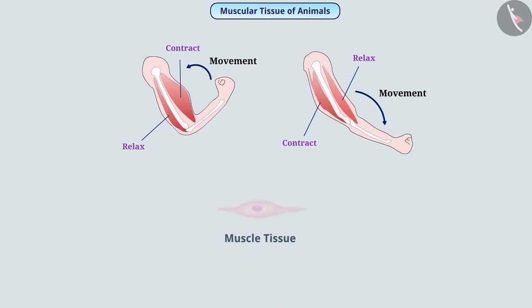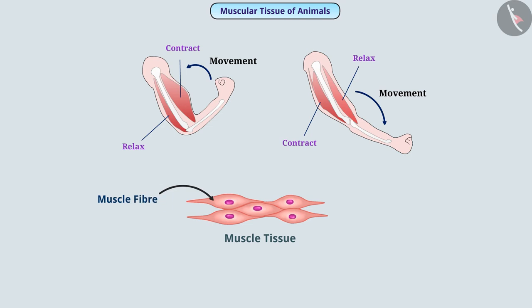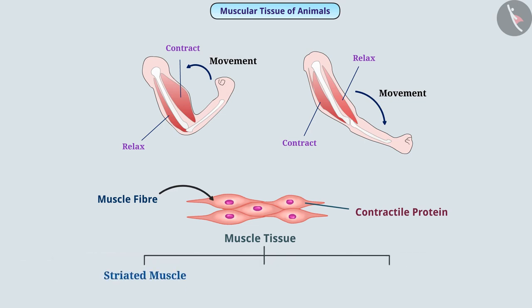The muscle tissue is made up of long cells. These cells are called muscle fibers. Muscles contain a special type of protein called contractile protein. This protein contracts and relaxes, causing movement of organs. On the basis of movement performed by the muscular tissue and its structure, it is classified into striated muscle, smooth muscle, and cardiac muscle.